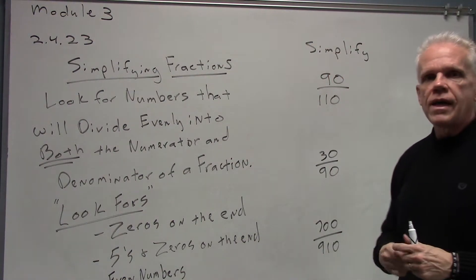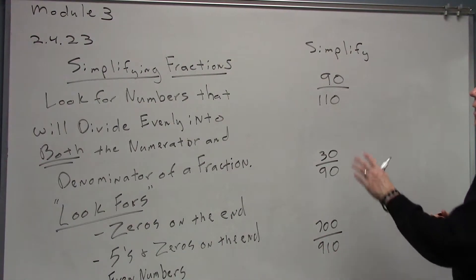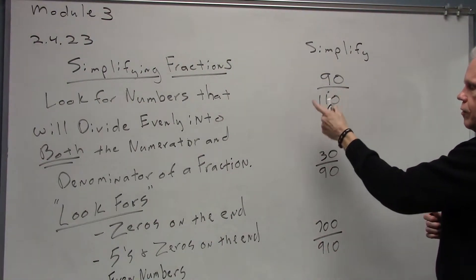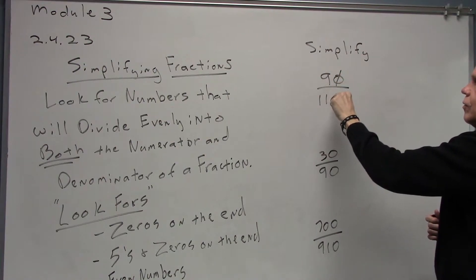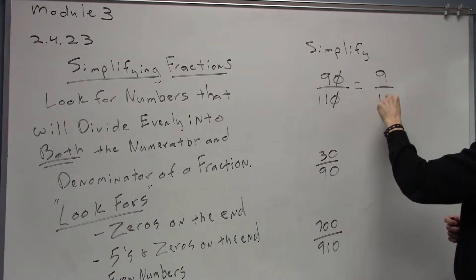Suppose we want to simplify 90 over 110. The first thing we're going to notice is simply that they both end in zeros, so let's cancel the zeros and knock this straight down to 9 over 11.